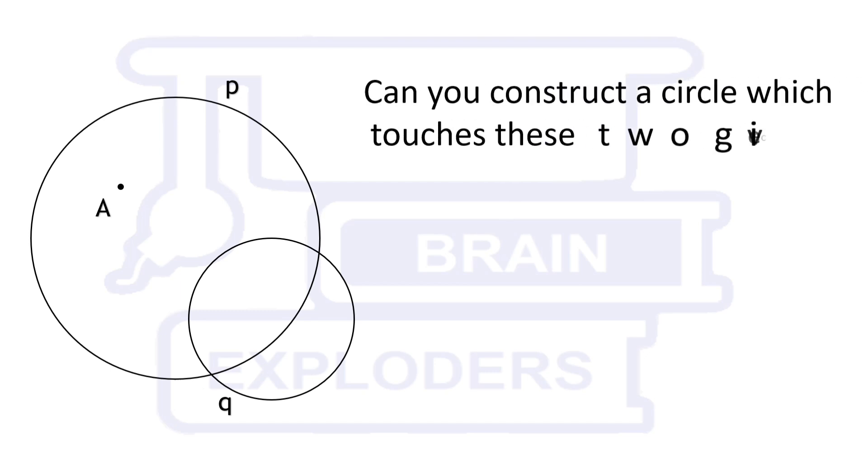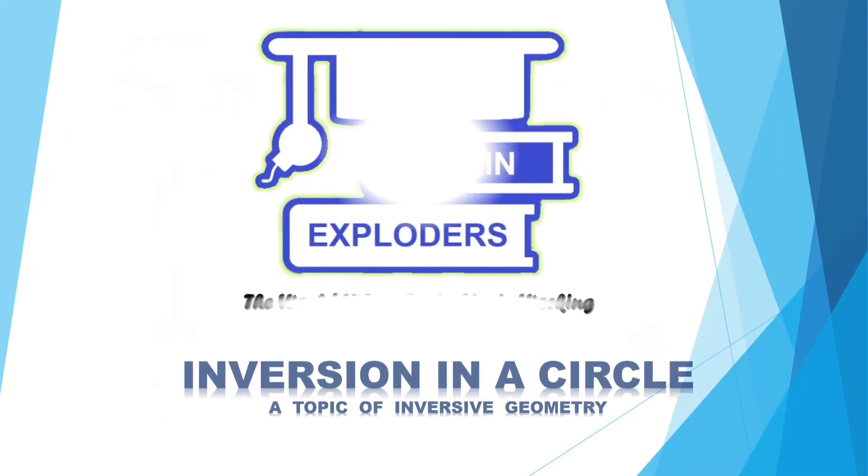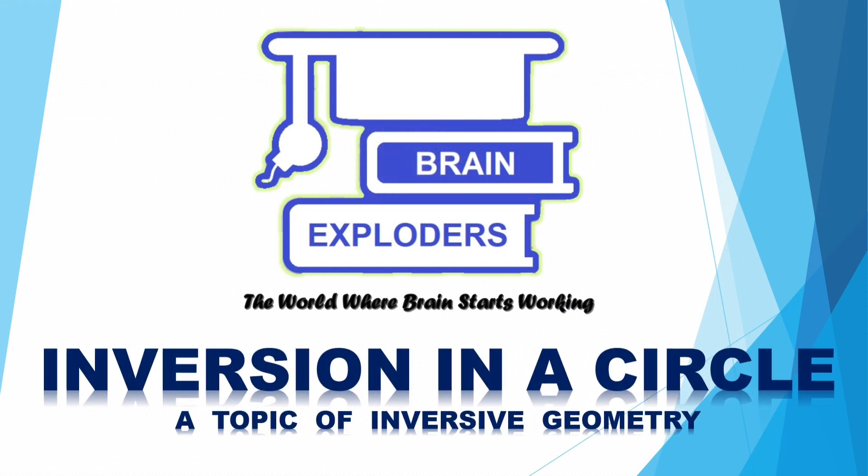Can you construct a circle which touches these two given circles P and Q and passes through point A? You are watching Brain Exploders, the world where brain starts working.